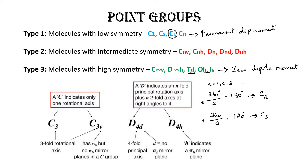V is the vertical plane of symmetry and H is the horizontal plane of symmetry. D is the dihedral plane of symmetry. The vertical plane is oriented vertically and the horizontal plane horizontally. The dihedral plane is parallel to the principal axis — if another plane of symmetry is parallel to the principal axis, that is a dihedral plane of symmetry.